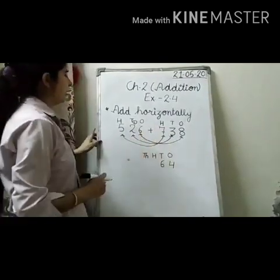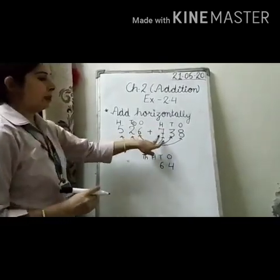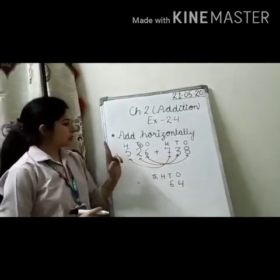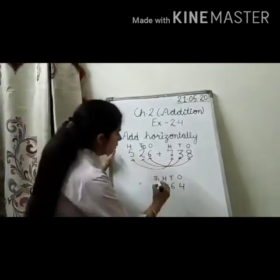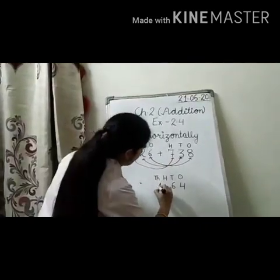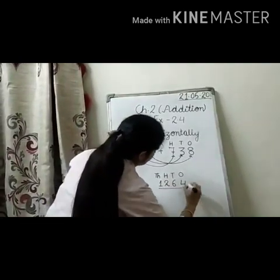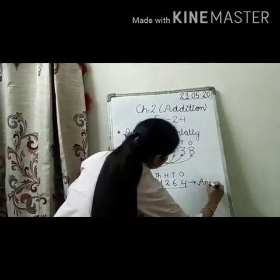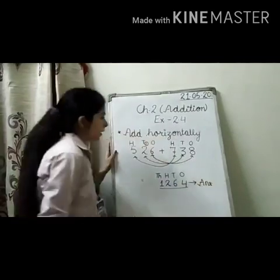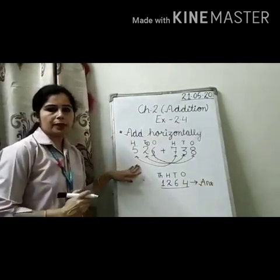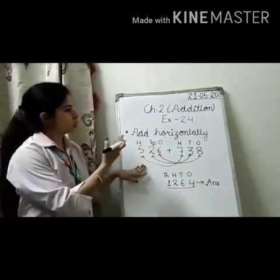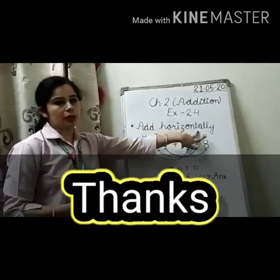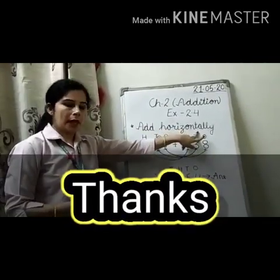Next, add the hundreds digits: 5 plus 7 equals 12. No carry over before this, so write 12 here. This gives us our final answer. Using this method you can solve exercise 2.4 on adding horizontally. Thank you.